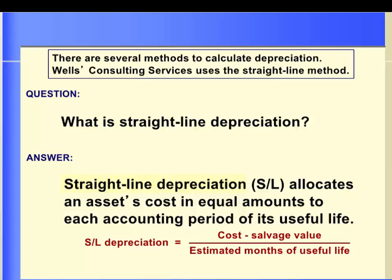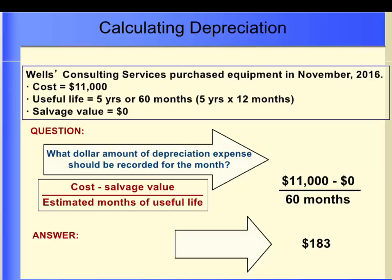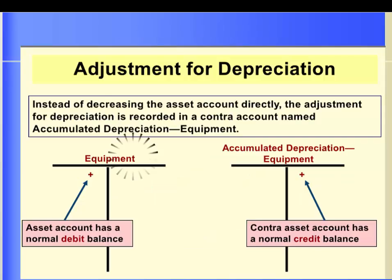We will be using the straight-line depreciation method to figure the periodic adjustment for depreciation. The salvage value of an asset represents what we estimate it will be worth at the end of its useful life. Salvage value is an estimate of the amount that may be received by selling or disposing of an asset at the end of its useful life. The equipment does not have any salvage value, and we expect to use it for five years in the business. In applying the straight-line formula, we calculate a monthly depreciation amount of $183.